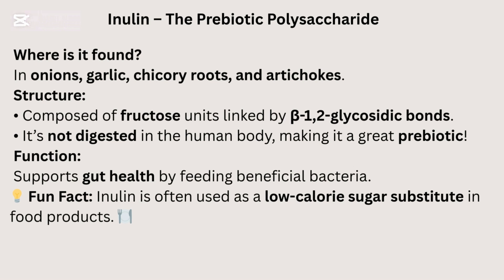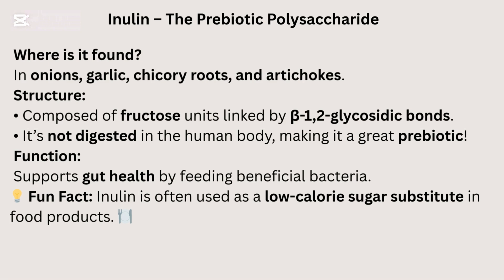Inulin — the prebiotic polysaccharide. It is found in onions, garlic, chicory roots, and artichokes. Structure: composed of fructose units linked by beta-1,2 glycosidic bonds. It's not digested in the human body, making it a great prebiotic. Function: supports gut health by feeding beneficial bacteria. Fun fact: inulin is often used as a low-calorie sugar substitute in food products.